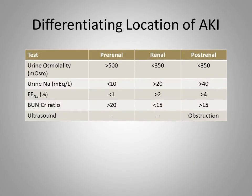Determining the location of AKI helps us with its treatment. Postrenal is easiest since imaging studies generally reveal the problem. With prerenal AKI, the kidney avidly retains volume to improve perfusion, resulting in high urine osmolality and low urine sodium.